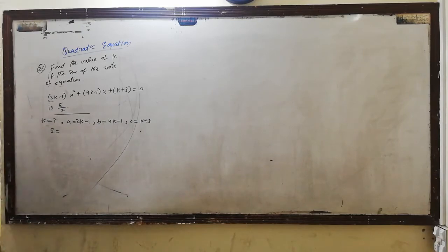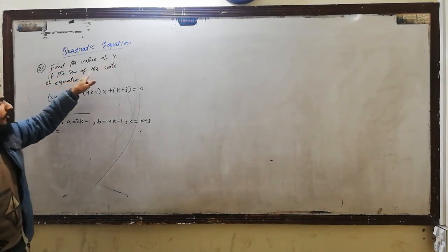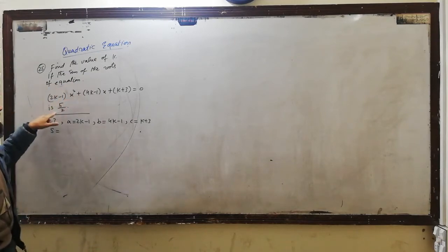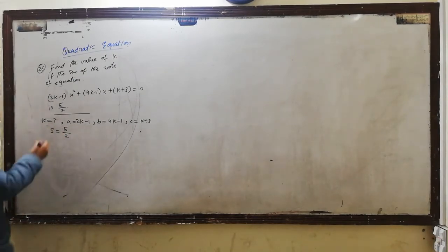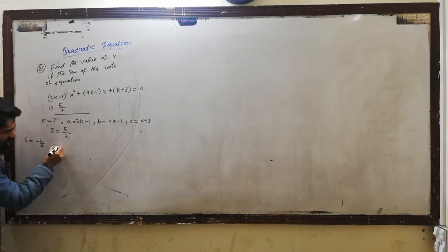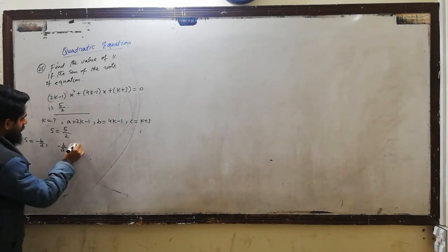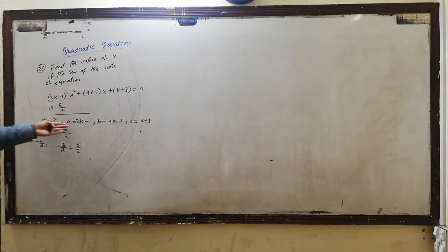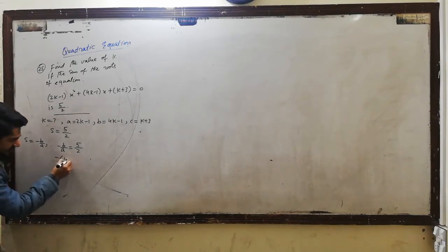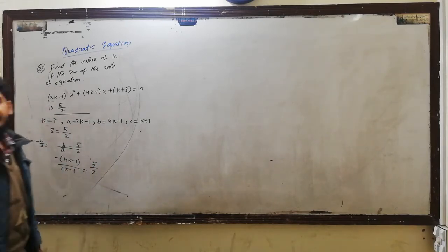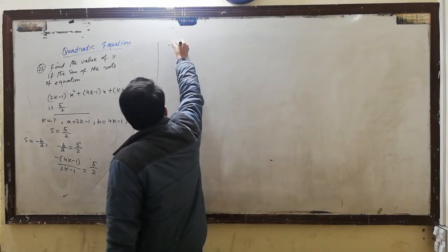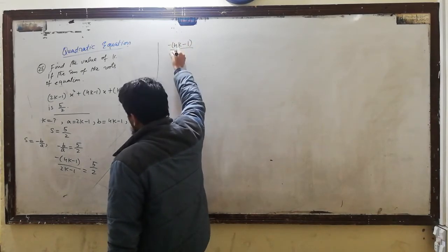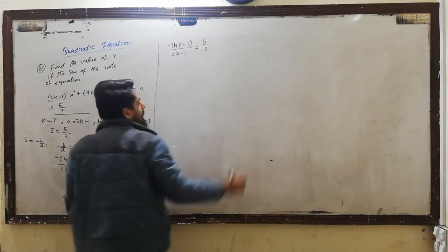Sum is equal to 5 divided by 2. हमें पता है कि इस quadratic equation का sum 5 divided by 2 के equal है। Sum की value we know that minus B divided by A. So, minus B divided by A is equal to 5 divided by 2. इसमें A और B दोनों की values put करेंगे: minus into B यानी 4K-1, divided by A यानी 2K-1, is equal to 5 divided by 2.